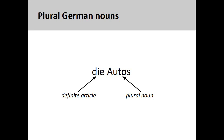The German noun 'Autos,' meaning 'cars,' is plural, so its definite article is 'die.' It is important to distinguish the plural definite article 'die' from the feminine singular article 'die.'